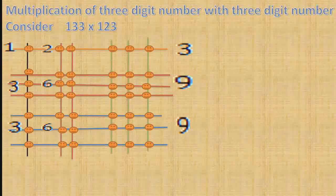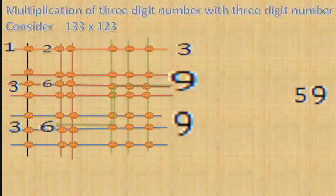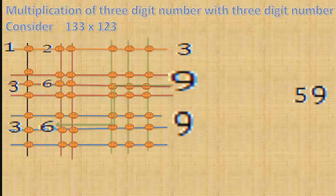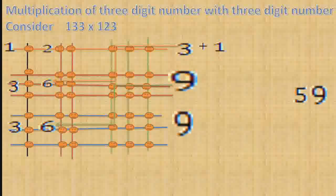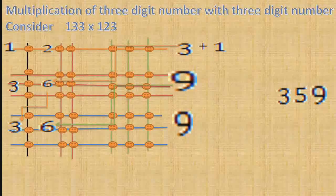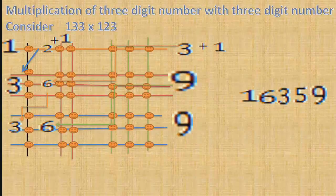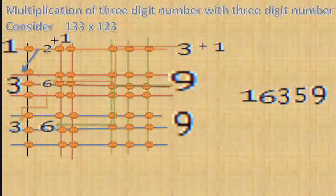Starting from the right bottom corner, the number 9 — write 9 in the answer. Then add 9 and 6, that is 15. Write 5 in the answer and take 1 as a carry. 3 plus 1 equals 4. Add 4 and 6 and 3, that is 13. Write 3 in the answer and take 1 as a carry. Then add 3 plus 3, that is 6, and finally write 1. Thus, 133 multiplied by 123 equals 16359.